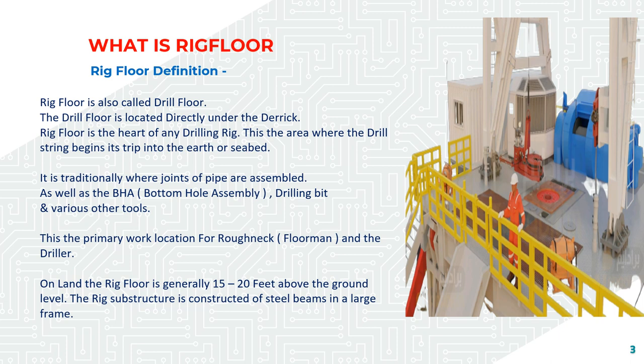Whether the rig is offshore or on land, it is traditionally where joints of pipe are assembled, as well as the BHA — Bottom Hole Assembly — drilling bit, and various other tools. It is the primary work location for the roughneck, also called the floor man and the driller. On land, the rig floor is generally 15 to 20 feet above ground level, and the rig substructure is constructed of steel beams in a large frame.